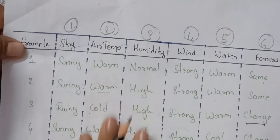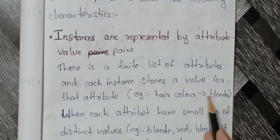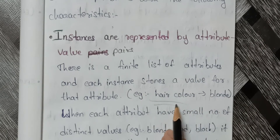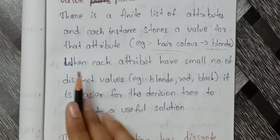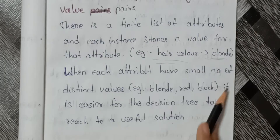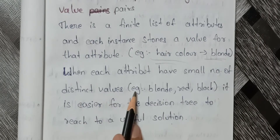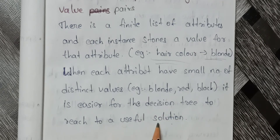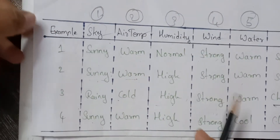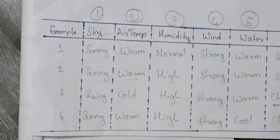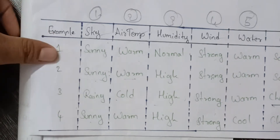For example, hair color has attribute values like blonde, red, and black. So hair color is one instance and blonde is one attribute value. When each attribute has a small number of distinct values — for example blonde, red, black — it is easier for the decision tree to reach a useful solution.